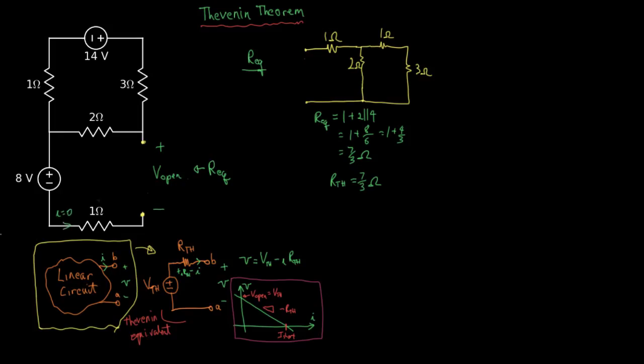so there's no voltage here. This top loop, we have six ohms being driven by 14 volts. So the current is 14 sixths or seven thirds, which means that that voltage in the open circuit case will be seven thirds times two, which is 14 thirds.